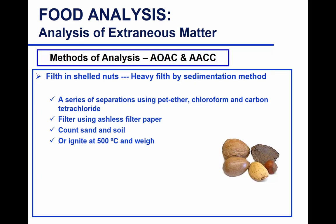For shelled nuts, there is a method specific for heavy filth by sedimentation. You de-shell the nut, do a defatting step with ether, then add chloroform and carbon tetrachloride — this makes the nut float while everything that is filth sediments. You then filter, count sand and soil under the microscope if not obvious, or since the inorganic matter will remain after ashing, you can get the weight. The nut shell is removed beforehand so it's not counted.